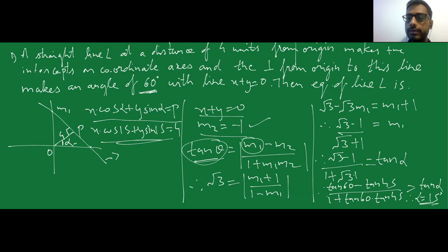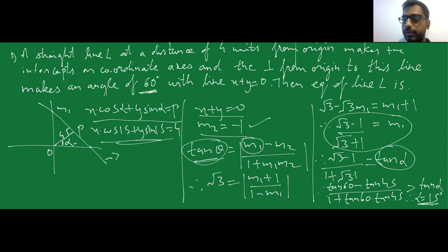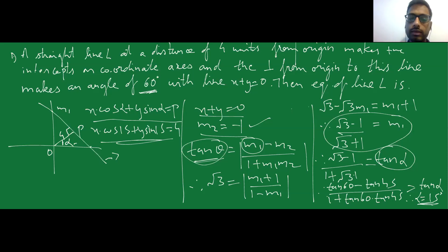Simplifying the angle formula gives an equation. Since slope equals tan(α), equating both expressions gives the value of alpha as 15 degrees. Substituting this value of alpha into the normal form equation gives the final answer.